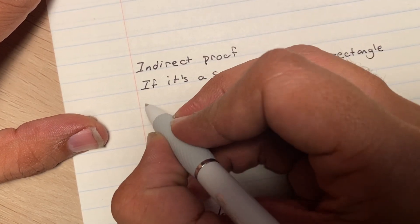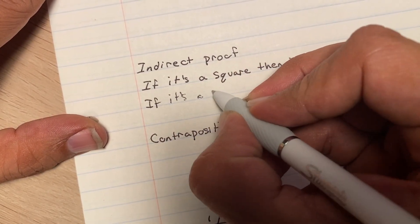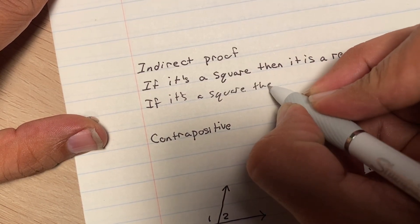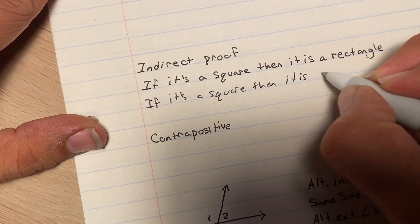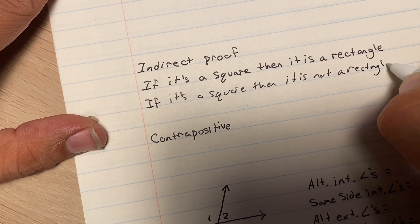So, if I wrote this statement as, if it's a square, then it is not a rectangle, okay?